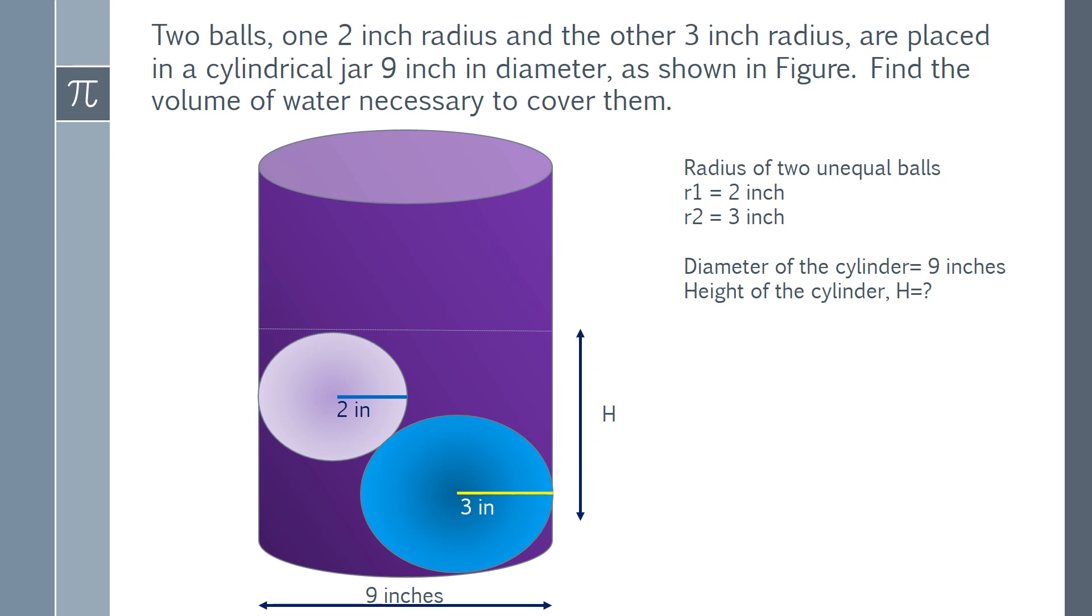Two balls, one 2-inch radius and the other 3-inch radius, are placed in a cylindrical jar of 9 inches diameter. Find the volume of water necessary to cover both the balls.